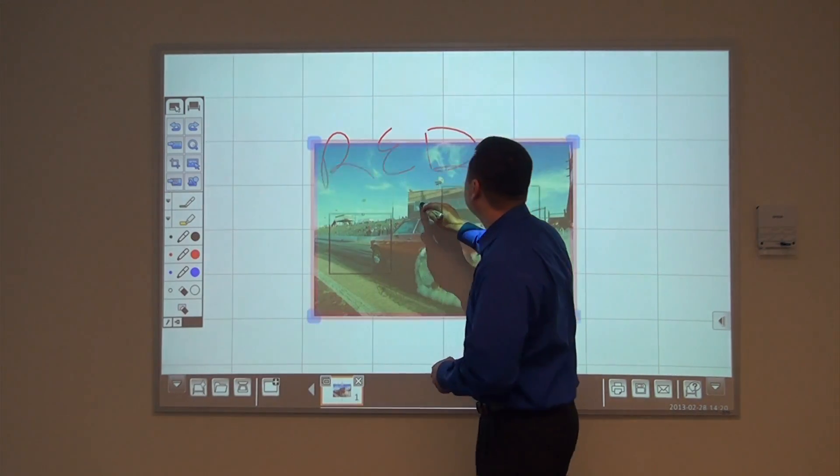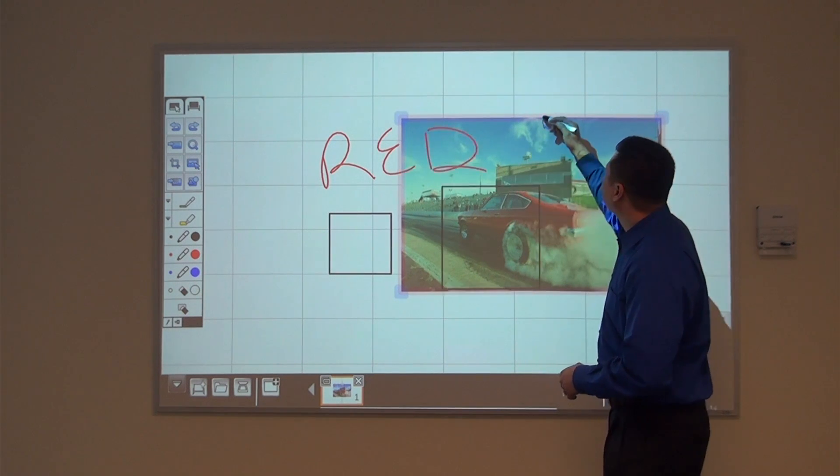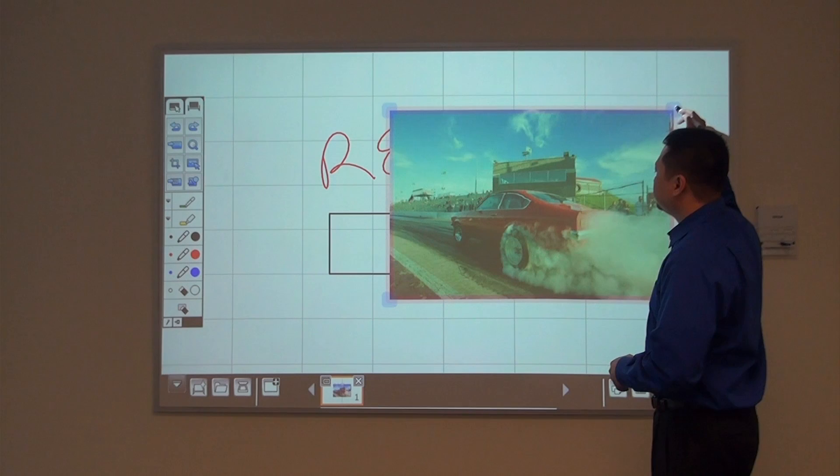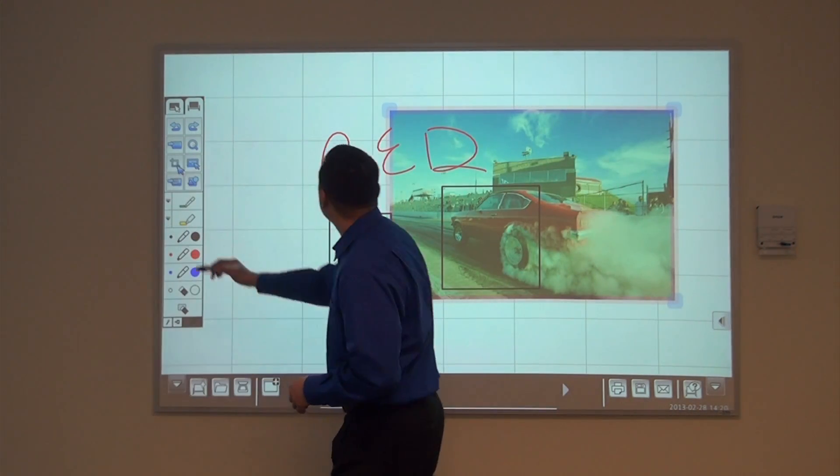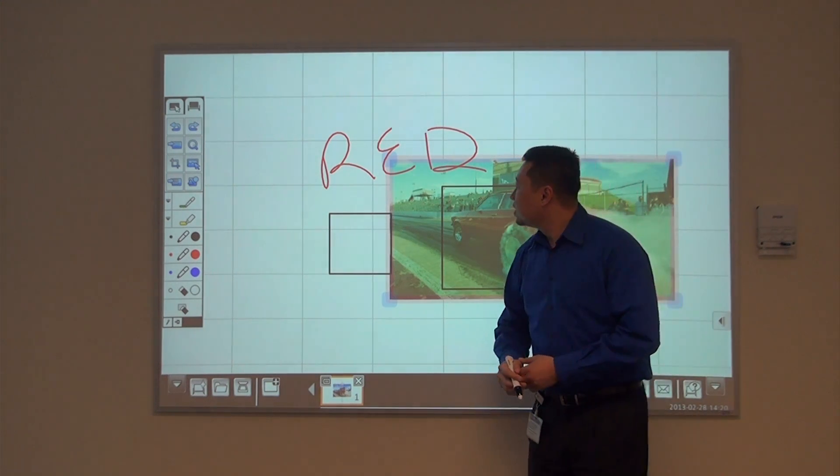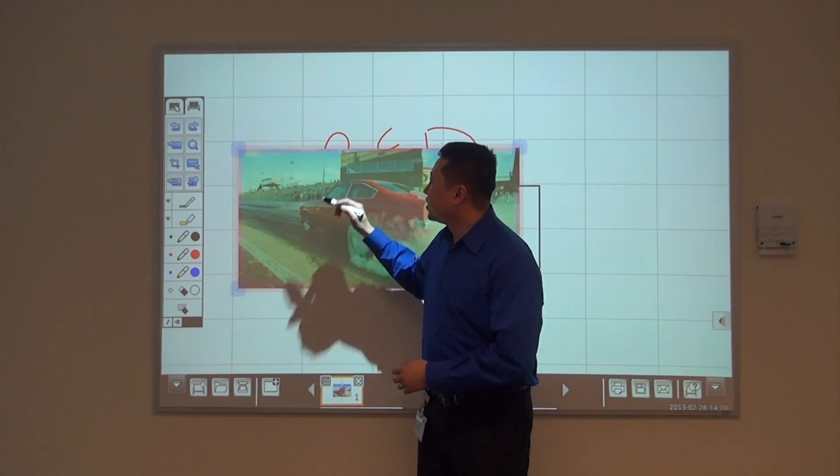To manipulate the image, I can move it around, shrink, and rotate. I can also crop the image, and move it to where I need to go.